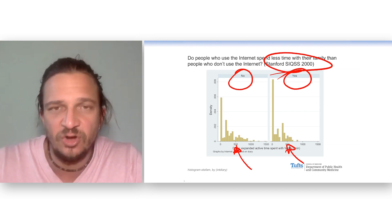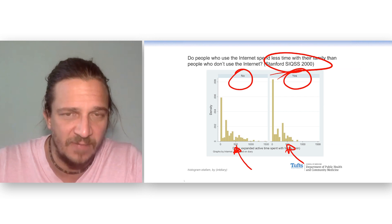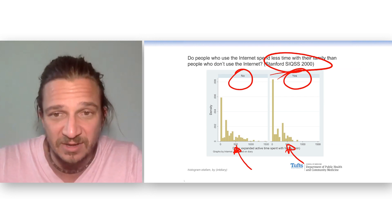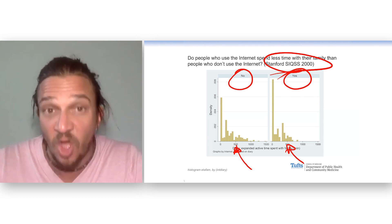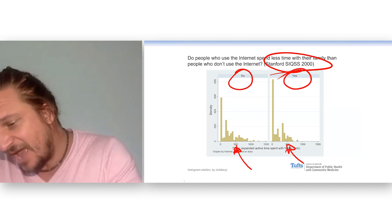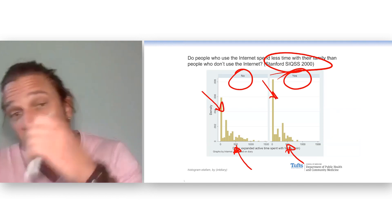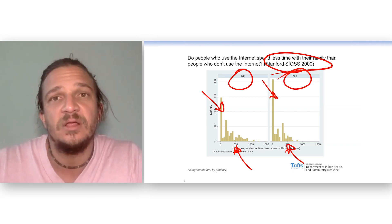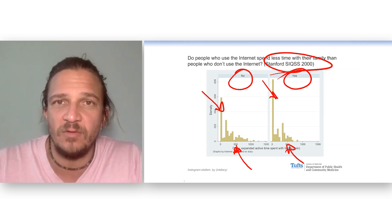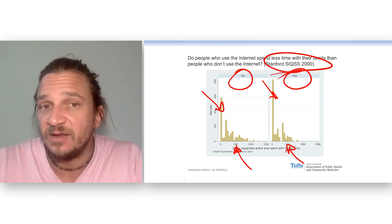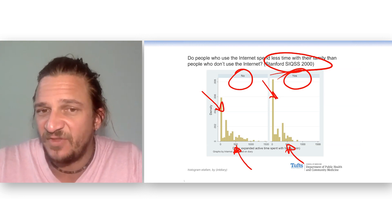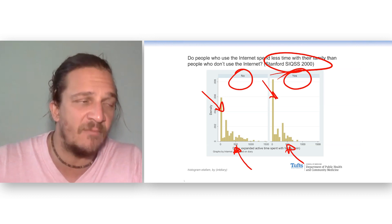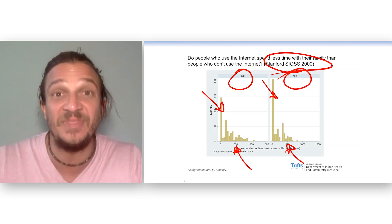We cannot do an independent samples t-test here because the data don't meet the assumptions of normality. Our gut says let's log the data, but because we have so many zeros, ask Alexa or Siri what the log of zero is — it's undefined. So you cannot log these. We have to think about whether there's any way to analyze these data that has a summary statistic of central tendency that makes sense, because it's not going to be the mean.